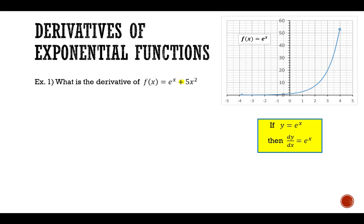So in this example we've got the separation of two functions of x with a plus or minus sign. So we can use the sum difference rule. So f prime of x is going to be equal to the derivative of e to the power of x plus the derivative of 5x squared.